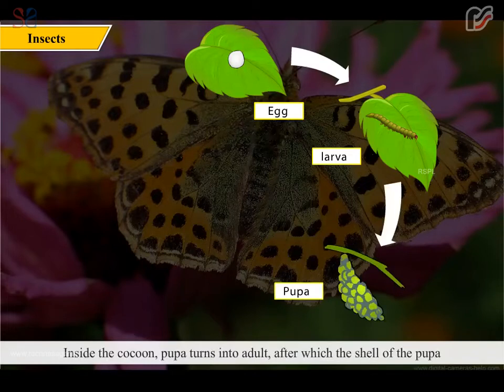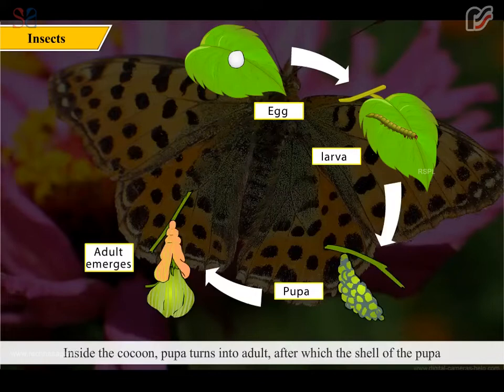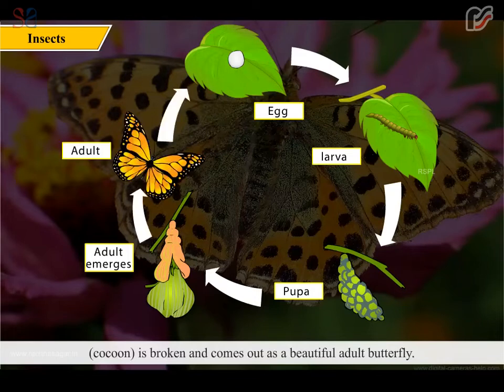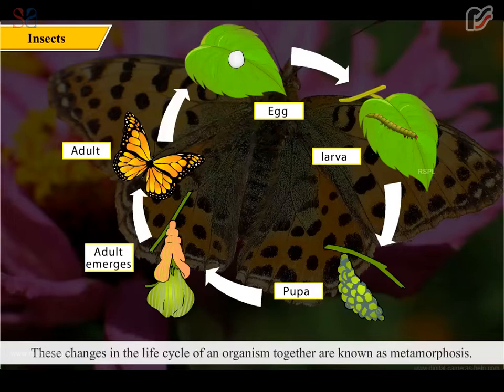Inside the cocoon, the pupa turns into an adult. After which, the shell of the pupa — the cocoon — is broken and the butterfly comes out as a beautiful adult. These changes in the life cycle of an organism together are known as metamorphosis.